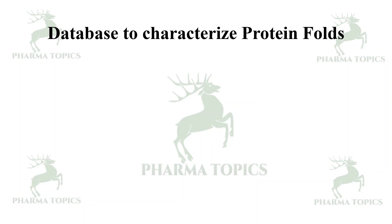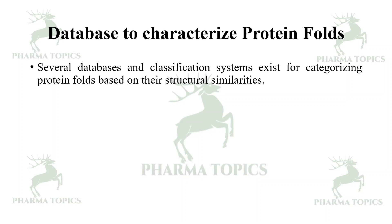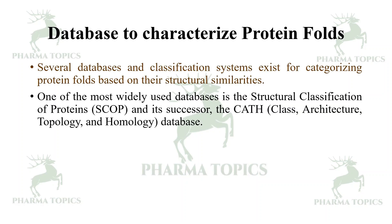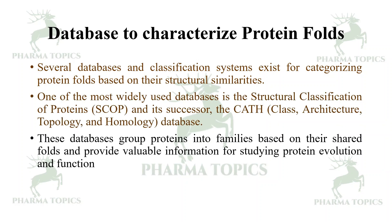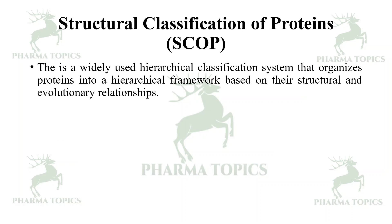Several databases and classification systems exist for categorizing protein folds based on their structural similarities. Two of the most widely used are the Structural Classification of Proteins (SCOP) and its successor the CATH — Class, Architecture, Topology and Homology — database. These databases group proteins into families based on their shared folds and provide valuable information for studying protein evolution and function.